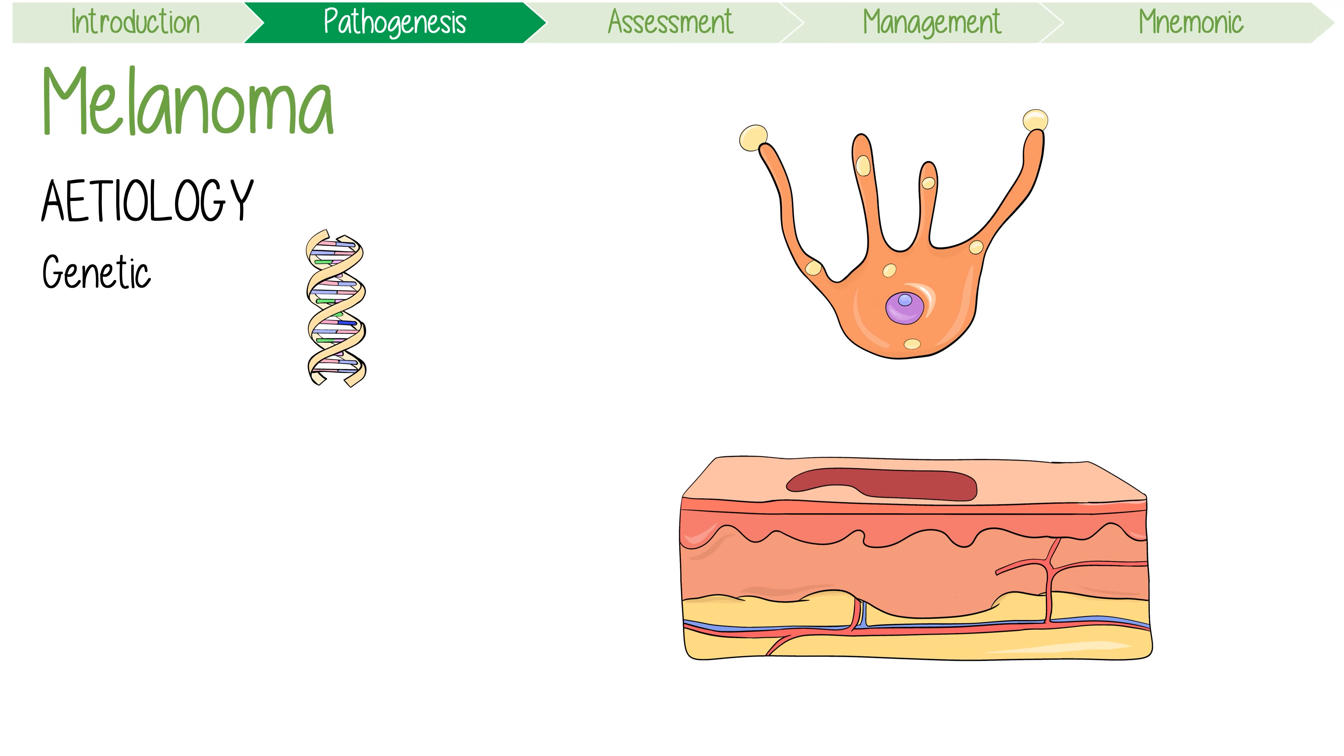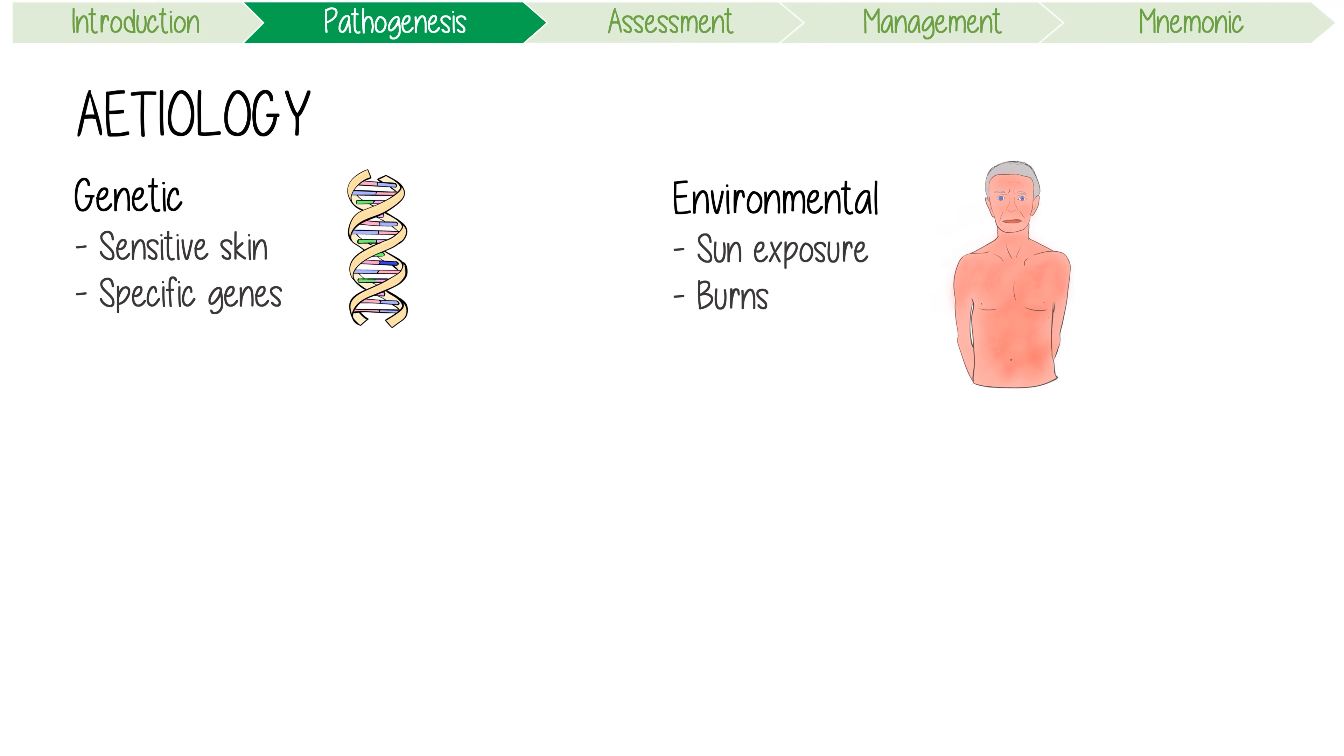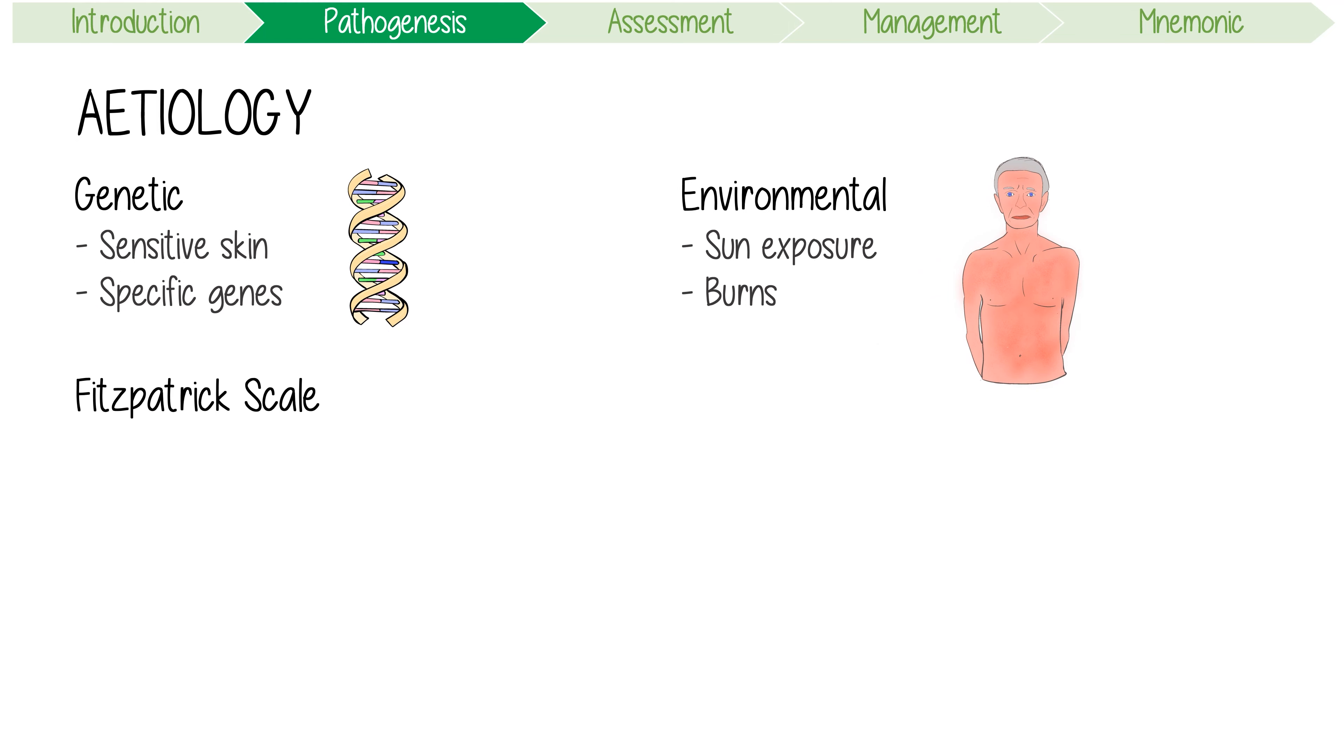As a bit of background, melanoma's etiology relates to genetic factors like the inheritance of sun-sensitive skin and specific melanoma-related genes, but also environmental factors like sun exposure and burns play a role. Talking about burns, the Fitzpatrick scale is often used to stratify skin tones based on their sun sensitivity.